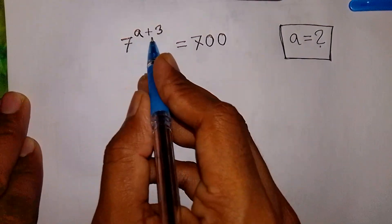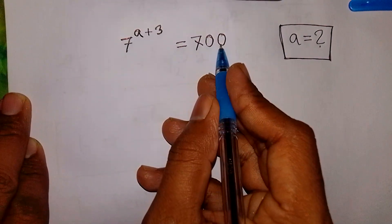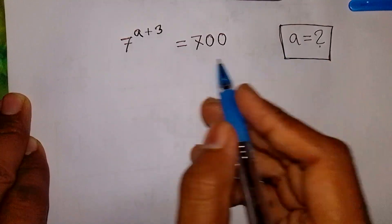7 to the power of a plus 3 is equal to 700. Find the value of a.